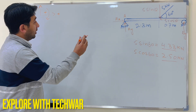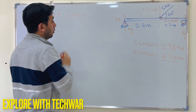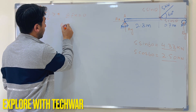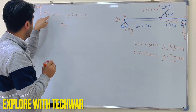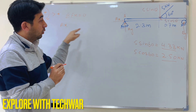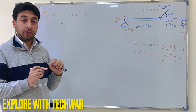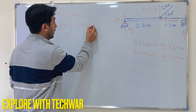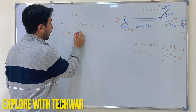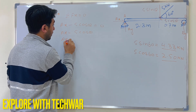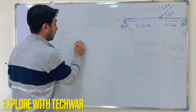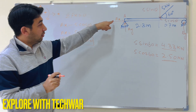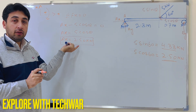Applying equilibrium in the x direction: sum of forces in x equals 0. Ax is acting to the right so it is positive, and 5 cos theta is acting to the left so it is negative. Therefore Ax minus 5 cos theta equals 0, giving Ax equal to 5 cos theta which is 2.50 kN. Since we get a positive sign, our assumed direction is correct.